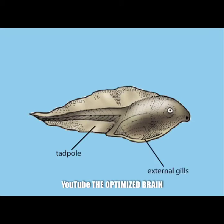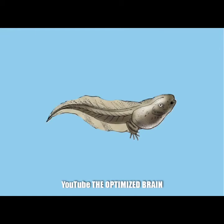These external gills will disappear as the animal continues to develop. The tadpole will transform itself in a process called metamorphosis, which is controlled by hormones.